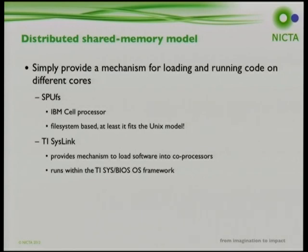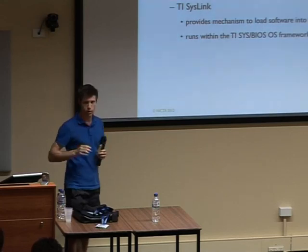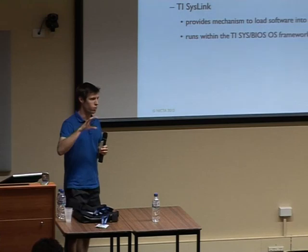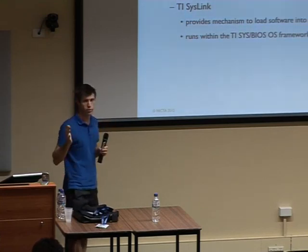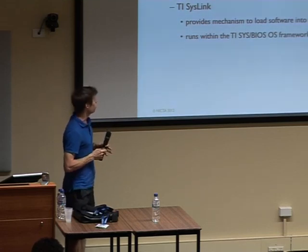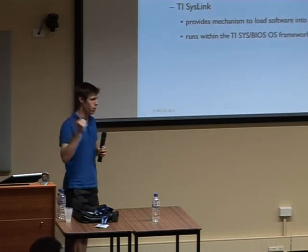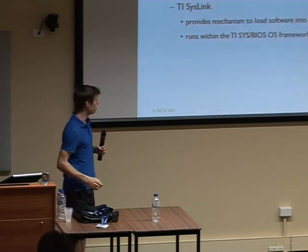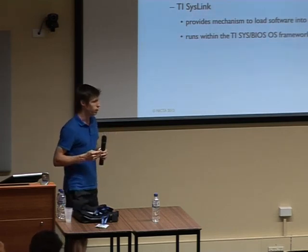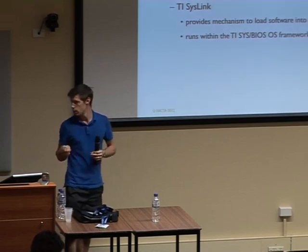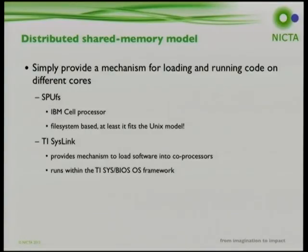The distributed shared memory model, which Linux currently implements, provides no OS mechanism - a third-party tool handles running code on different cores. With the Cell processor and the CPUFS framework, the main program on the big core distributes tasks to eight synergistic processing units via the Unix file system model. For OMAP, TI provides syslink, which lets you place a binary blob in memory and run it on the small core under a proprietary OS framework. There are various advantages and disadvantages to each of those models.